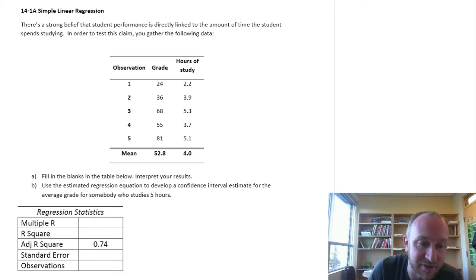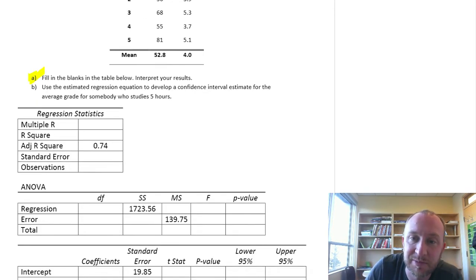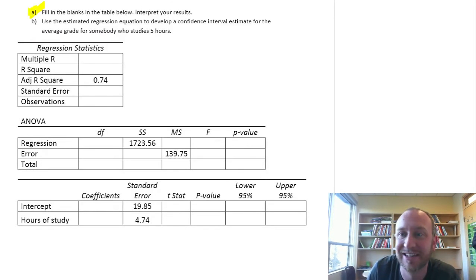As you can see in the first problem here in part A, it just says fill in the blanks in the table below. Well, this table below is pretty well all blanks. There's very little information here provided. So this is going to give us practice in calculating pretty well every part of a simple linear regression.